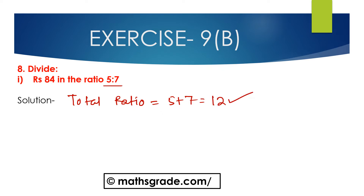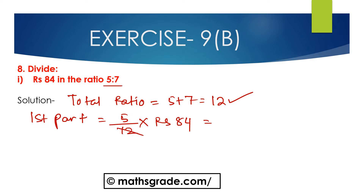The first part is 5 divided by the total ratio 12, multiplied with 84. Canceling 12 and 84 — 12 multiplied by 7 is 84 — so we get 7. Then 5 multiplied by 7 is 35. The first share is 35 rupees. For the second part, the ratio is 7.